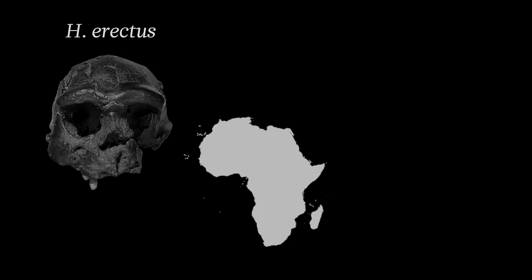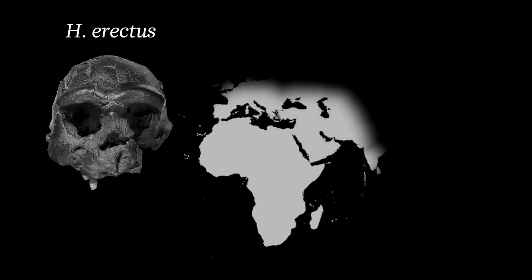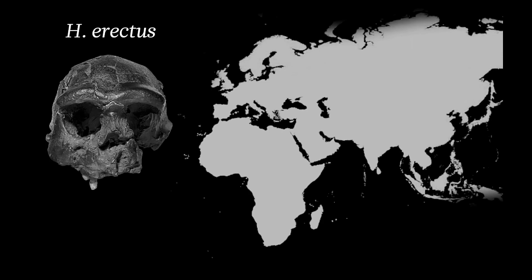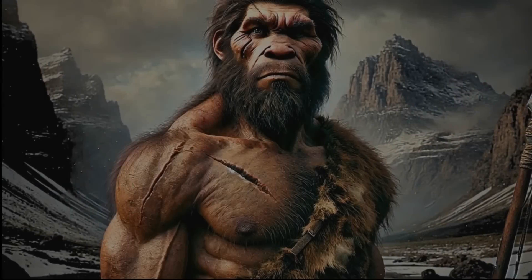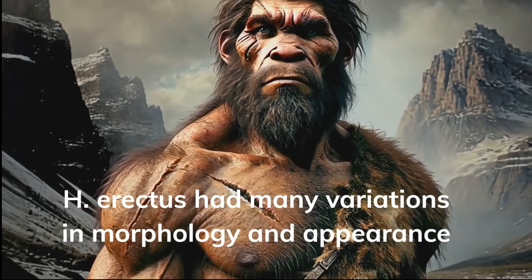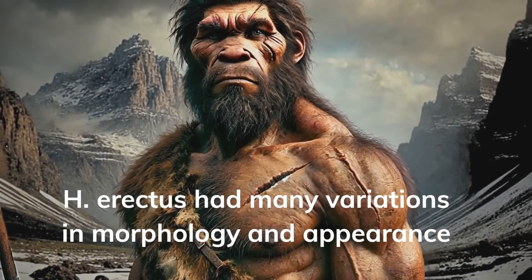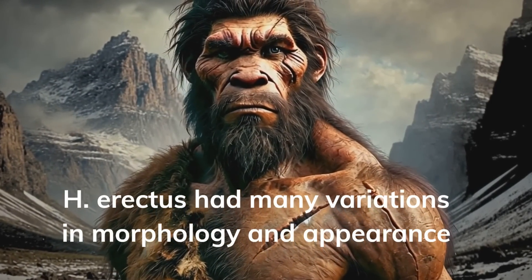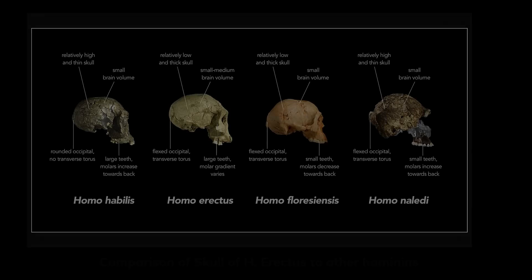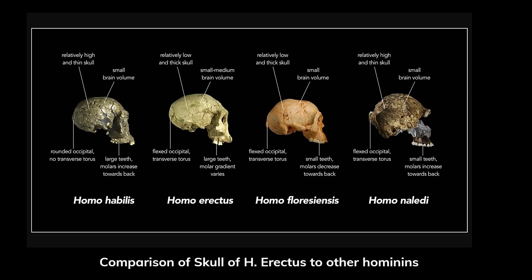New discoveries paint a picture of a human ancestor more sophisticated than previously believed. Use-wear analysis of tools reveals several interesting finds: analysis of stone tool bases reveals that the hominid likely attached stone points to sticks, creating a sort of spear — an important step in human development involving composite tool-making. Paleoanthropologists are particularly interested in the spread of Homo erectus into East Asia, and there is abundant evidence of the species in China, with locations such as Zhoukoudian and Yunxian producing significant fossils and archaeological evidence.